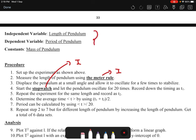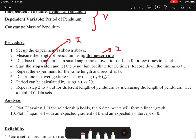We say that let the pendulum oscillate for 20 times and record the timing as t1, and repeat the experiment for the same length and record as t2. Number six, step number six, I say determine the average time using this equation. There's no problem. After that, period can be calculated using this formula: average time divided by 20 oscillation.